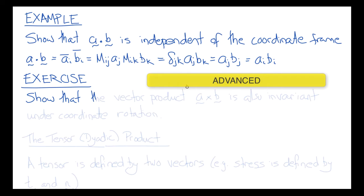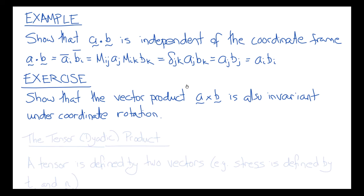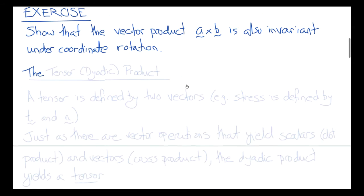As another exercise, you can do the same thing for the vector product A cross B. So if A is a physical quantity and B is a physical quantity, you'll be able to show that the cross product is also a physical quantity — regardless of which frame of reference you use to calculate it, you'll get the same vector.